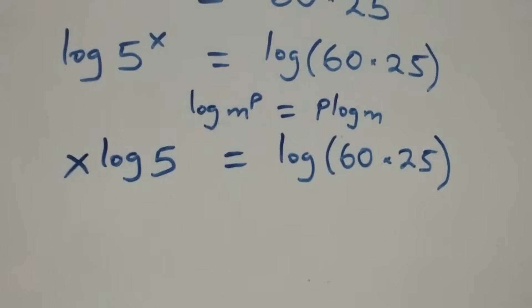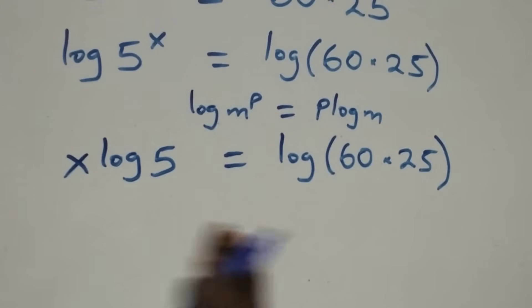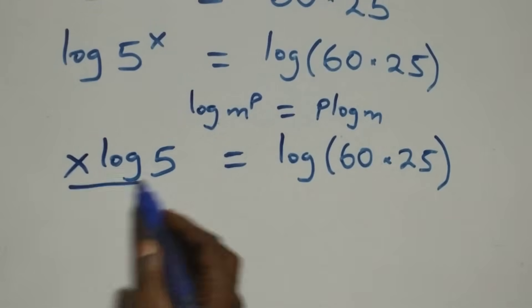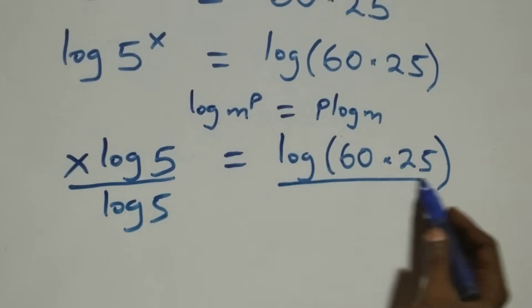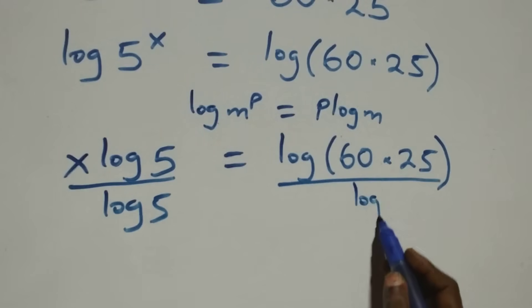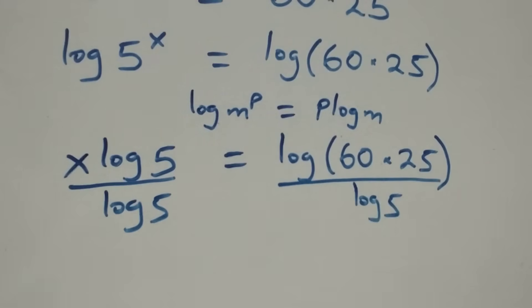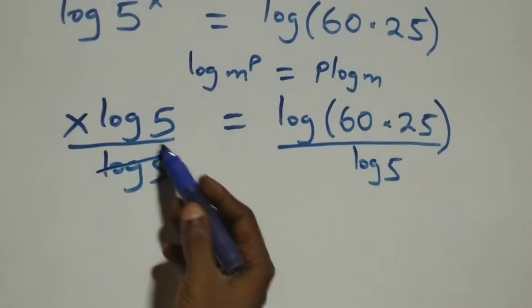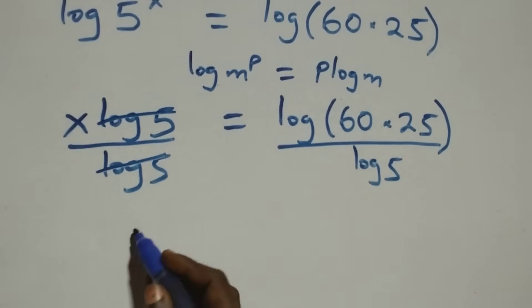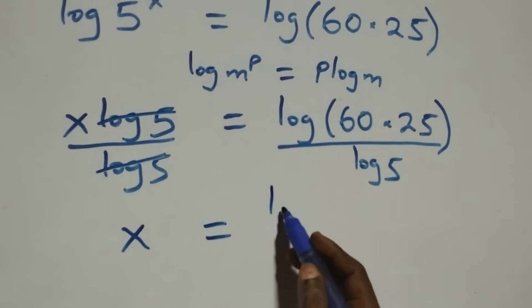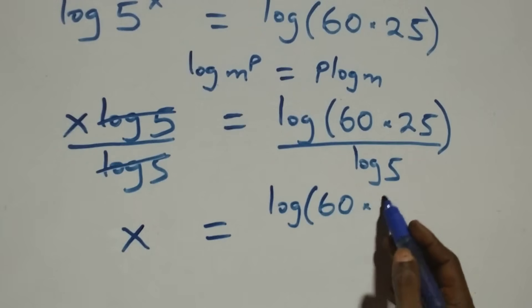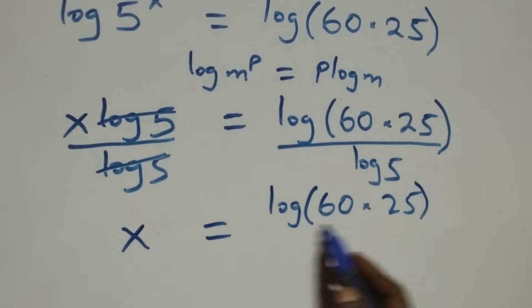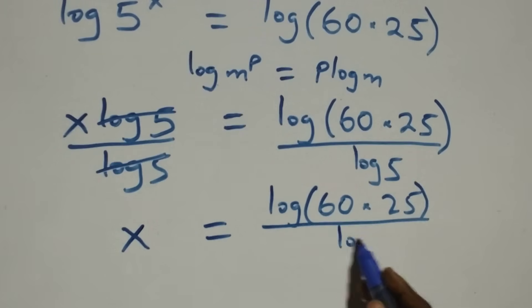The next step: we divide both sides by log 5. Log 5 cancels on the left, and we have x equals log of 60 times 25 over log 5.